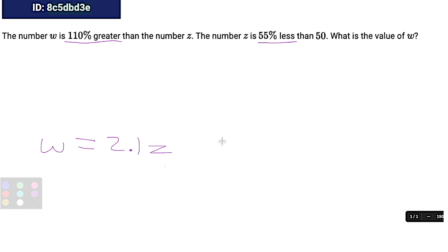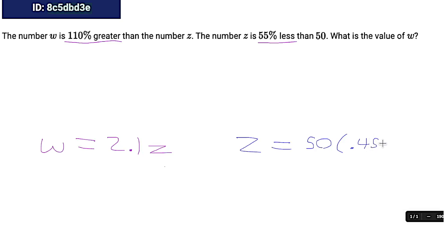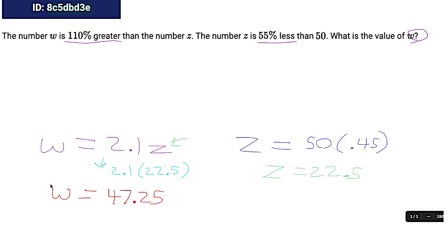Then it says z is 55% less than 50. If we want to subtract 55%, we take 100 minus 55, which is 45. So it would be 50 times 0.45. Let's get that number: 50 times 0.45 is 22.5. So z equals 22.5. Now we substitute into our earlier expression: w equals 2.1 times 22.5, which is 47.25. They were asking for the value of w, and we've found it — our answer is 47.25.